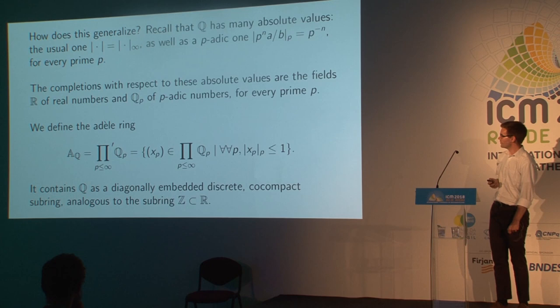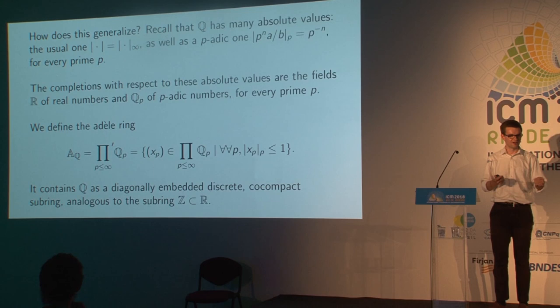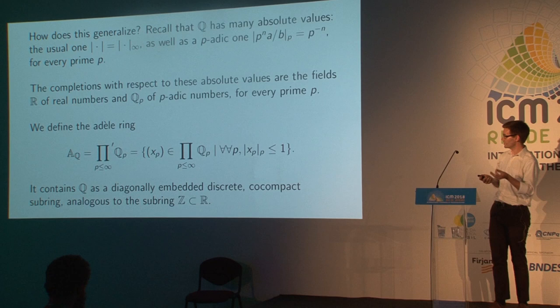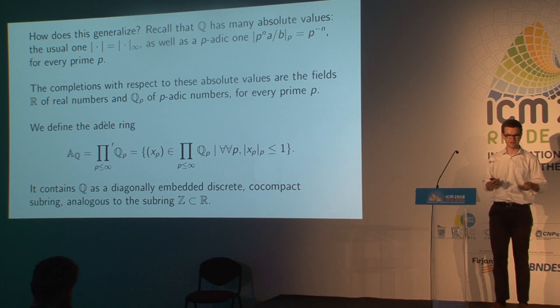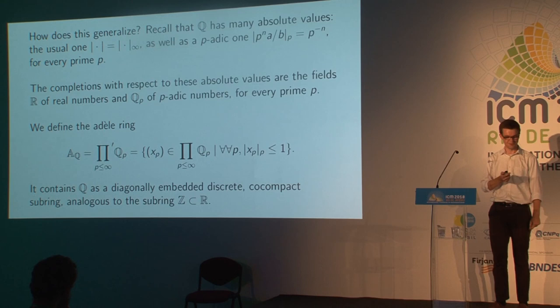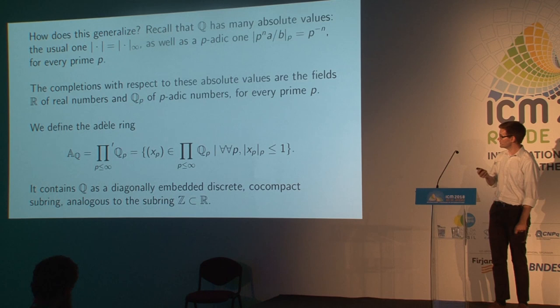Now we'll generalize this, and use it to motivate the introduction of the Adele ring. The Adele ring is an object number theorists introduce to put all the different completions of the rationals on an equal setting. There's one completion for every non-trivial absolute value: the usual real absolute value and one p-adic absolute value for every prime p. The Adele ring is not quite the full direct product of all completions; it's a subring called the restricted direct product. The reason for passing to that subring is that you end up with something locally compact, adapted to doing Fourier analysis. The rationals embed diagonally inside it, and this embedding is closely analogous to the usual embedding of integers into the reals — a discrete subring which is co-compact.